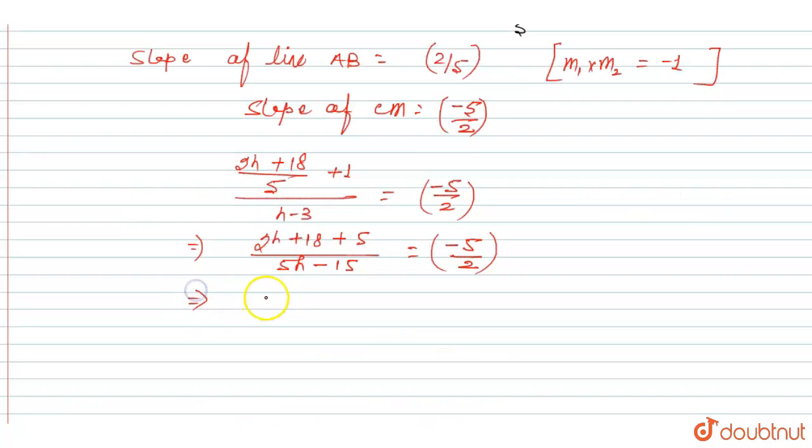When cross multiply, then 2 into 2h is 4h plus 36 plus 10 equals minus 25h plus 75.